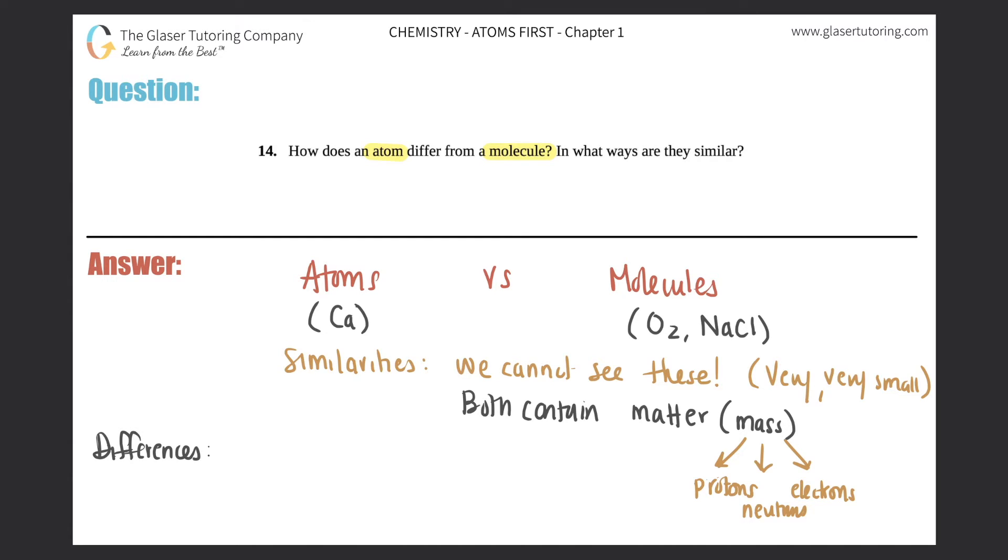The differences between an atom and a molecule—you can kind of see them in what I wrote up here. Ca would be an example of an atom versus O2 and NaCl would be examples of molecules. Atoms are a single unit. Once you have two or more elements or two or more atoms coming together, it's not an atom anymore. It would be classified as a molecule.